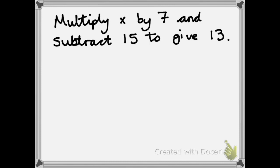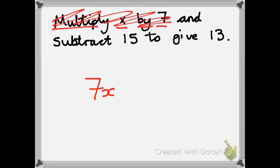Now this question is a little bit different because it's given to me as words. I just follow it step by step. Multiply x by 7. Well, multiplying x by 7 I can show like this: 7x. And subtract 15, take away 15.